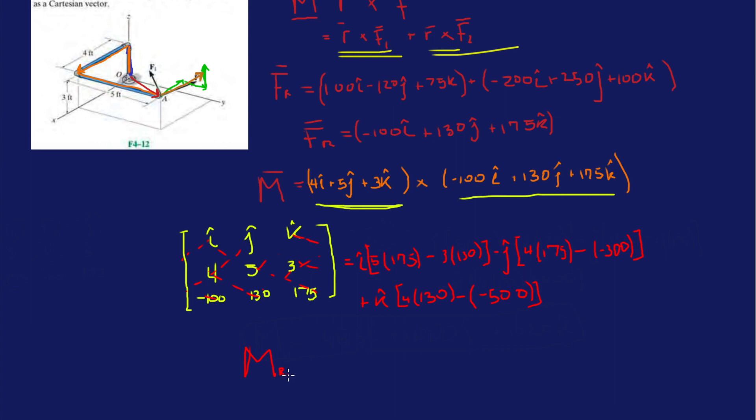And now the resultant moment about O in vector form, in Cartesian form: 5 times 175 minus 3 times 130, so we have 485I, then 4 times 175 plus 300, minus 1000J, and then 4 times 130 plus 500, plus 1020K. And that is the resultant moment about point O caused by these two forces.